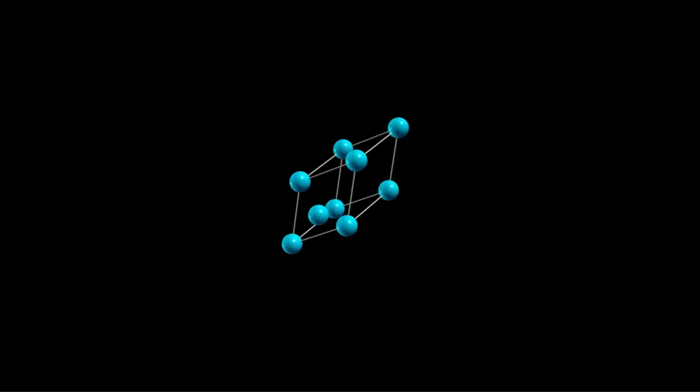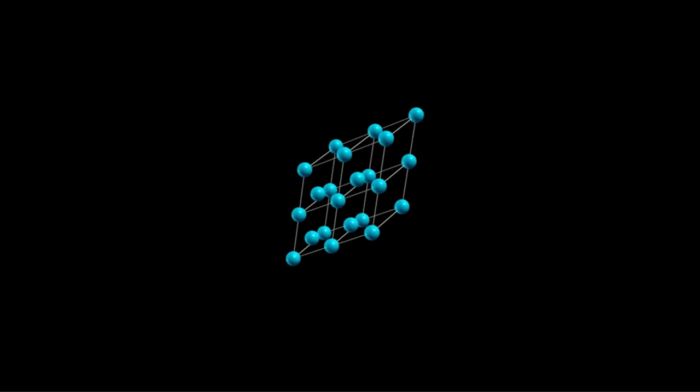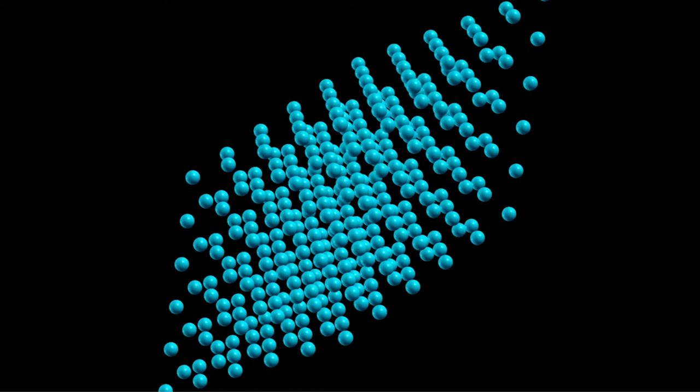This is an asymmetrical periodic unit of a silicon crystal. By adding more and more of these elements, a model of the whole crystal structure is obtained. It is a highly ordered structure with well defined symmetry.